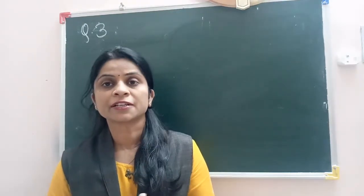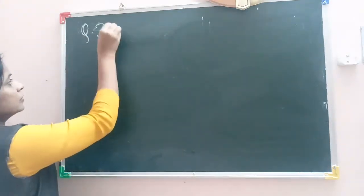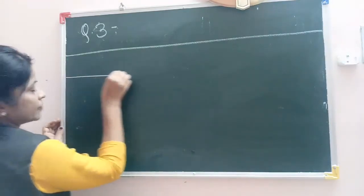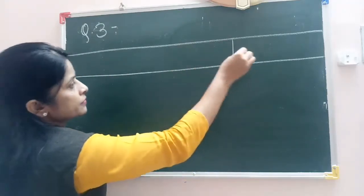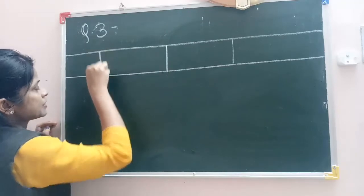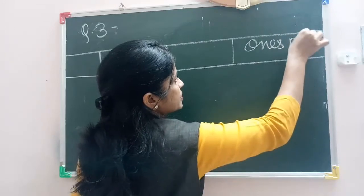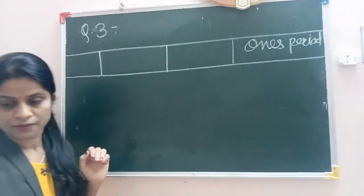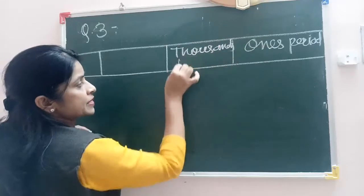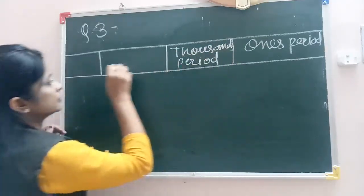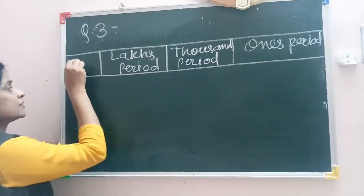Now next question number 3: which is the greatest 8-digit number? We have to place it on a place value chart. First of all, we will draw the place value chart with the ones period, thousands period, lakhs period, and crore period.